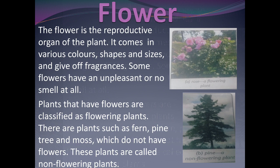The flower is the reproductive organ of the plant. It comes in various colors, shapes, and sizes, and gives off fragrances. Flowers have different colors, different shapes and sizes, and they have a good smell. Some flowers have an unpleasant smell, and some have no smell at all.